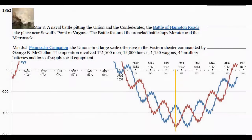In 1862, on March 8th, a naval battle pitting the Union and the Confederates — the Battle of Hampton Roads — takes place near Sewall's Point, Virginia, featuring the ironclad battleships Monitor and Merrimack. From March to July, the Peninsular Campaign, the Union's first large-scale offensive in the Eastern Theatre commanded by George B. McClellan, involved 121,500 men, 15,000 horses, 1,150 wagons, 44 artillery batteries, and tons of supplies. It's 1862 — down in the depths of the wave.